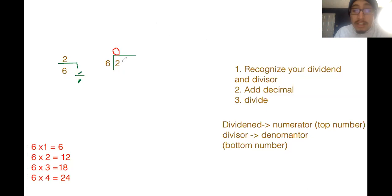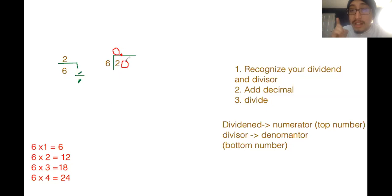Since six cannot go into two, it's not just that the answer is zero. Remember, we're going to end up with a decimal. So what we're going to have to do is add our decimal. When we add a decimal, we also have to make sure to add our zero. We're only going to add the decimal once — decimals do not have multiple decimal points. So now that we've added our decimal, we're good to go.